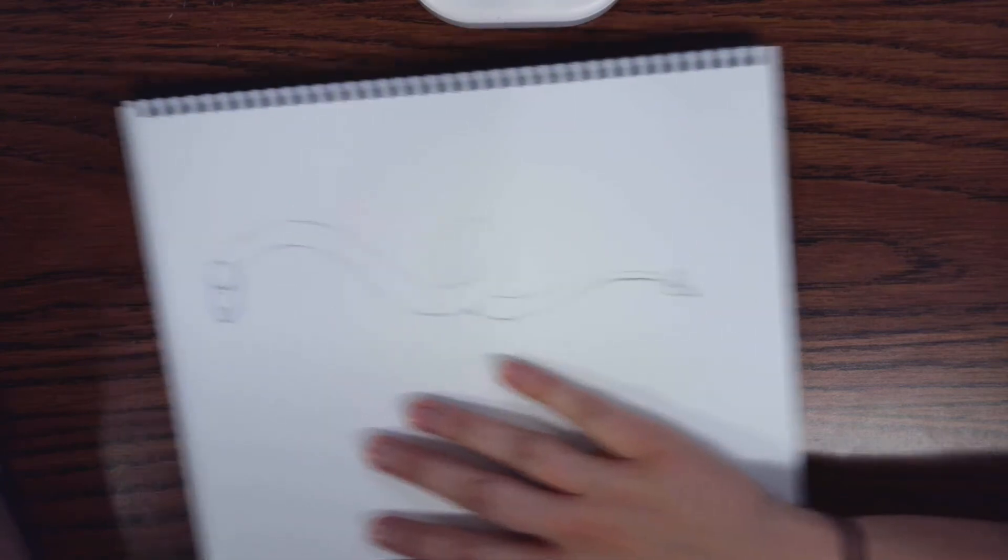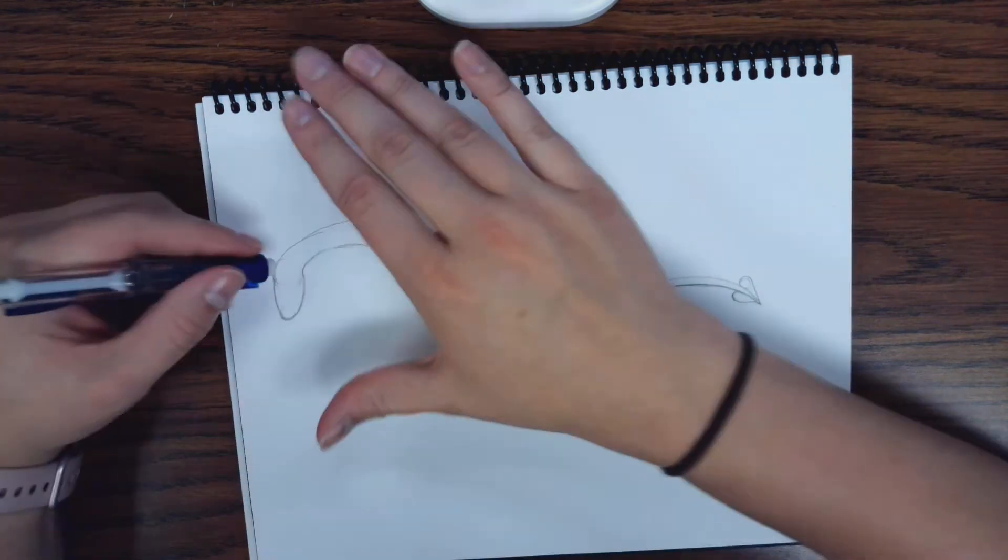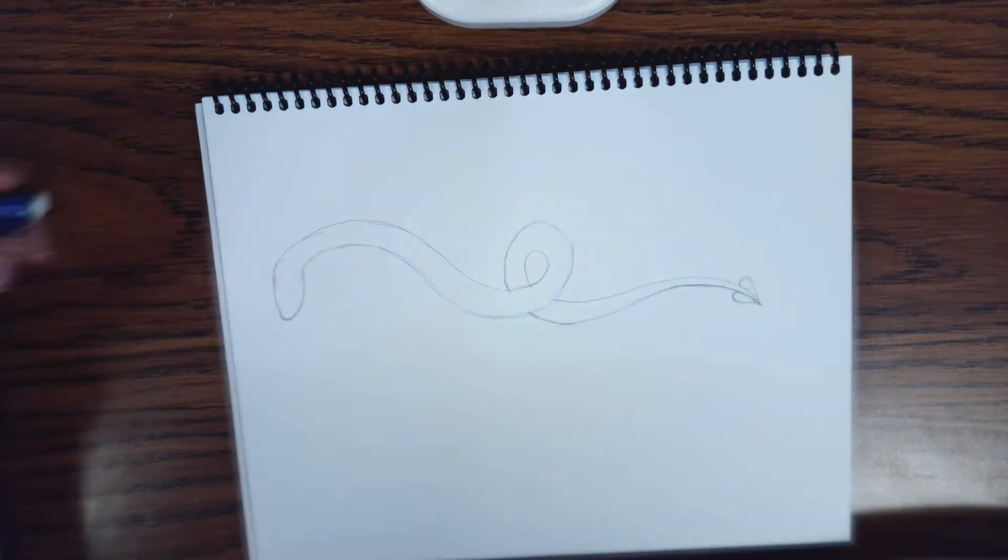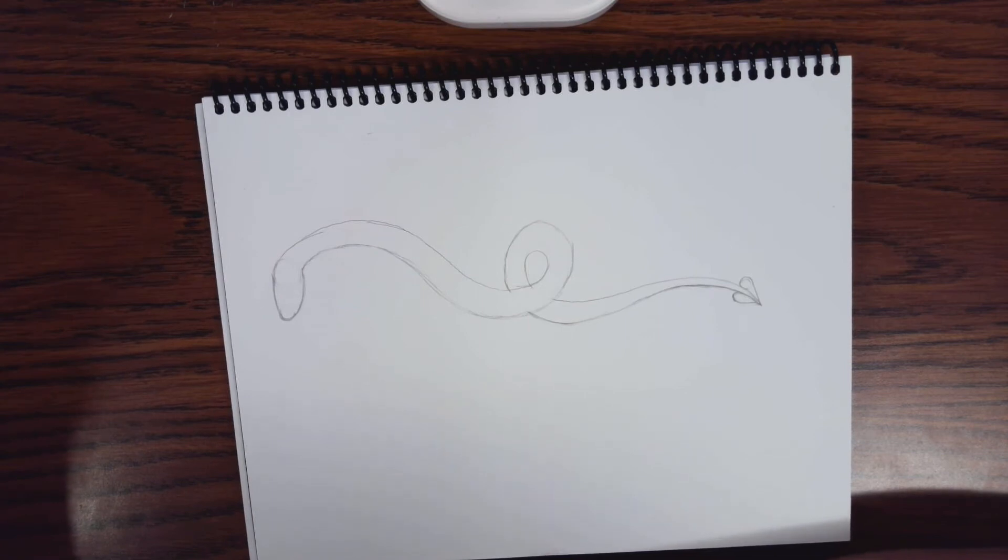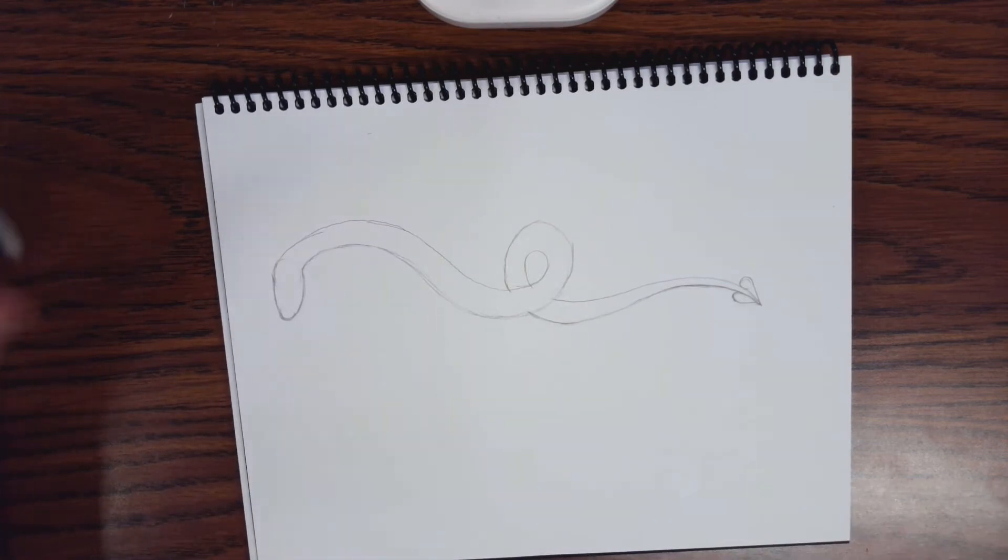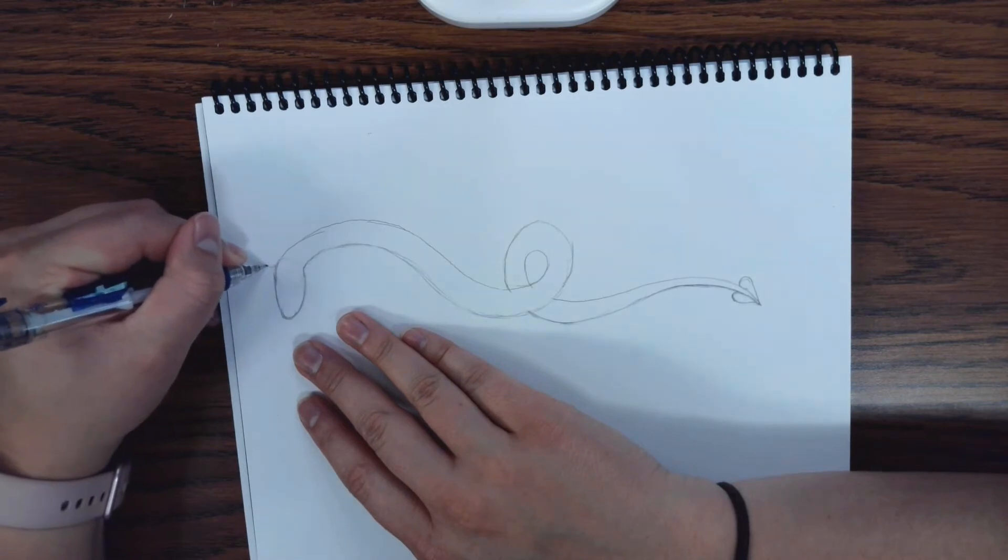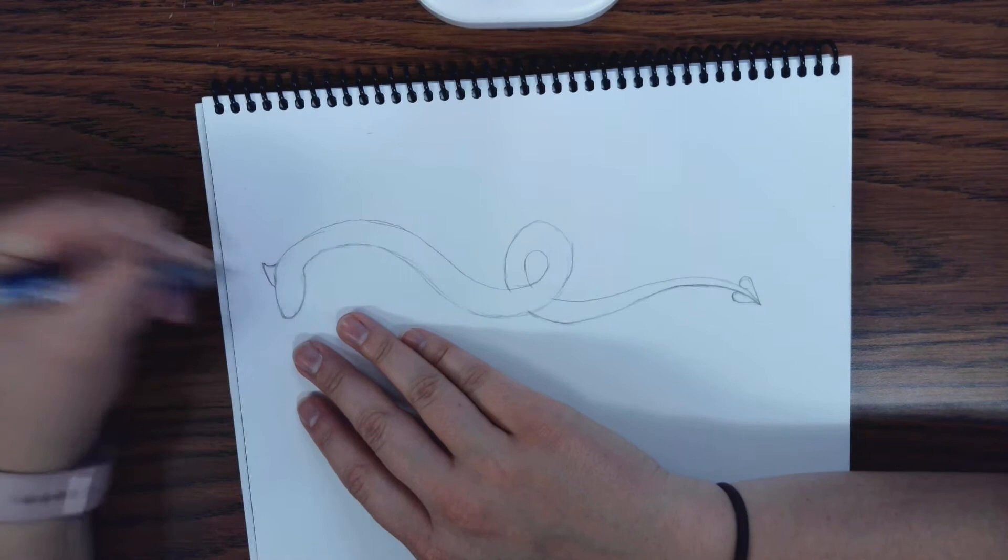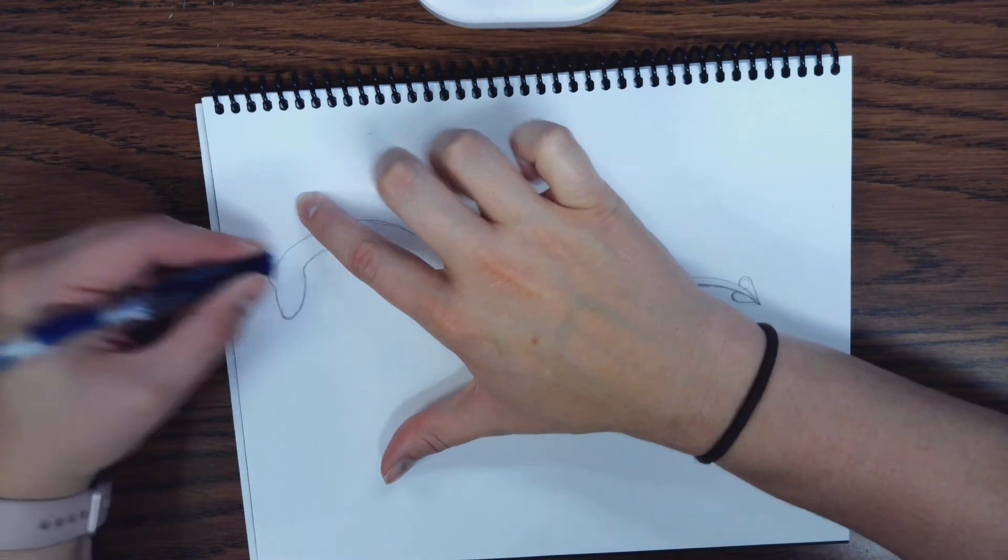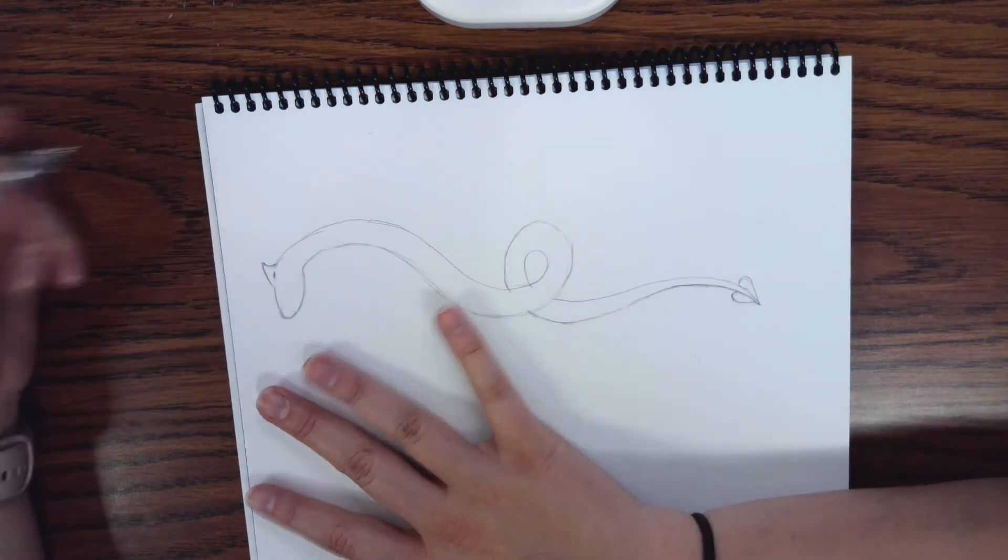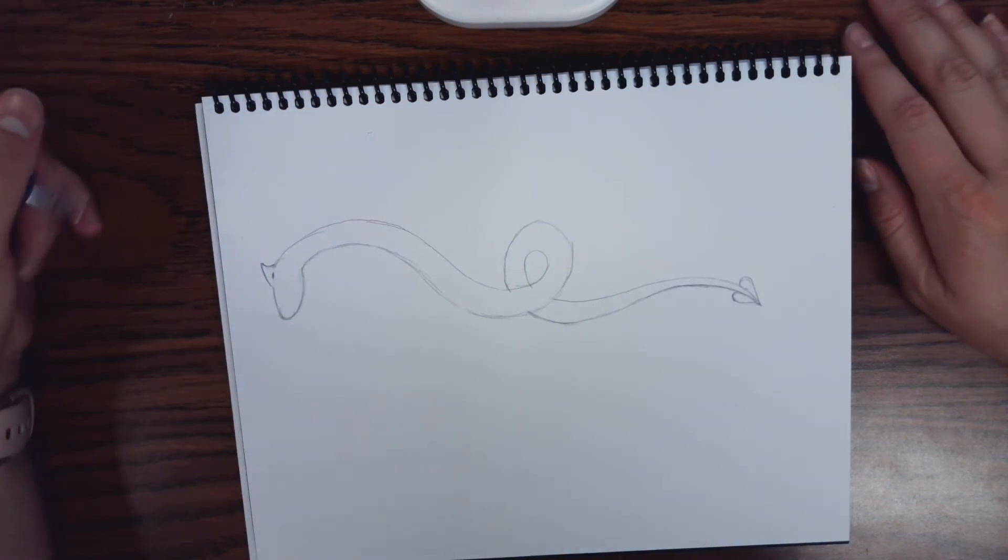From here, we're going to work on the face. I'm going to go in and erase my circles now because I no longer need those. I'm going to add a little fin on his head, kind of like a shark. And then I'm going to erase this line right here and add just a sliver in the center to give it that more 3D-like feel, like it's on his head, but not awkwardly connected with a line.